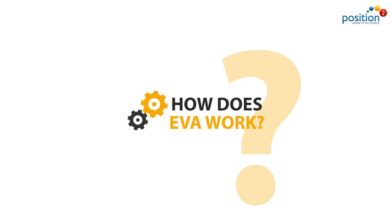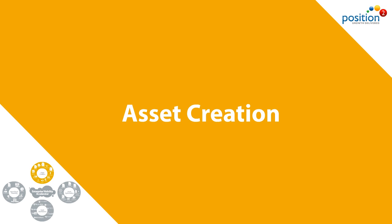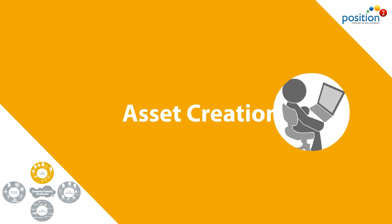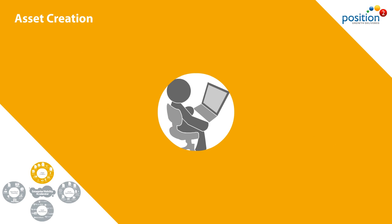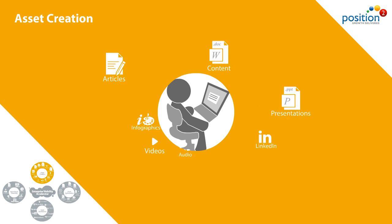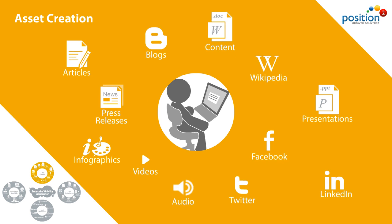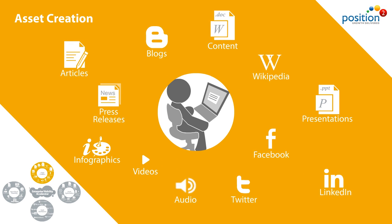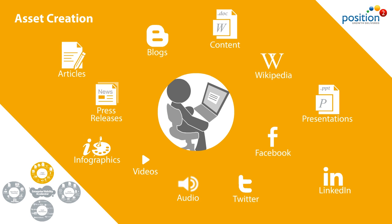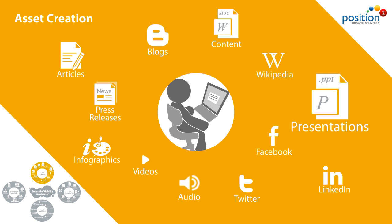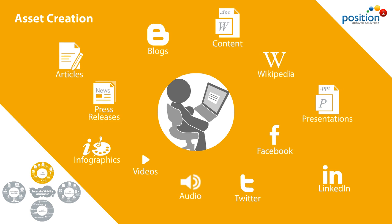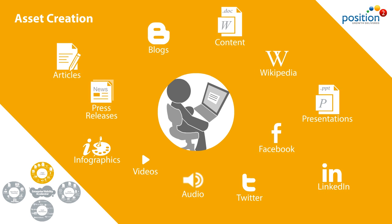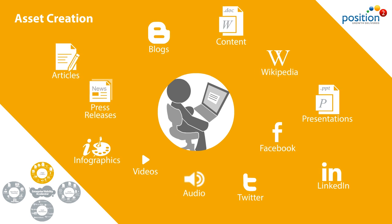There are four steps in the EVA framework. Step 1: Asset Creation. We review your existing content and repurpose it into multiple formats. For example, a white paper on your website can be repurposed into a presentation, a PDF, a video, and an infographic.